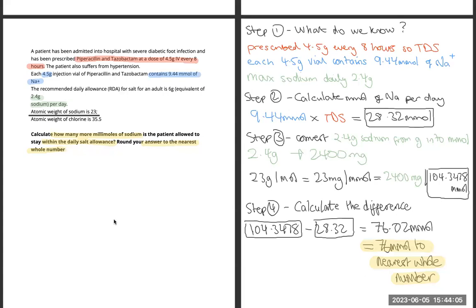We then need to convert our sodium per day allowance into millimoles. So you have 2.4 grams, which becomes 2,400 milligrams. We know that the atomic weight of sodium is 23, meaning there are 23 grams per mole — so that is 23 milligrams per millimole. Therefore, 2,400 milligrams contains 104.35 millimoles. That is our daily allowance.